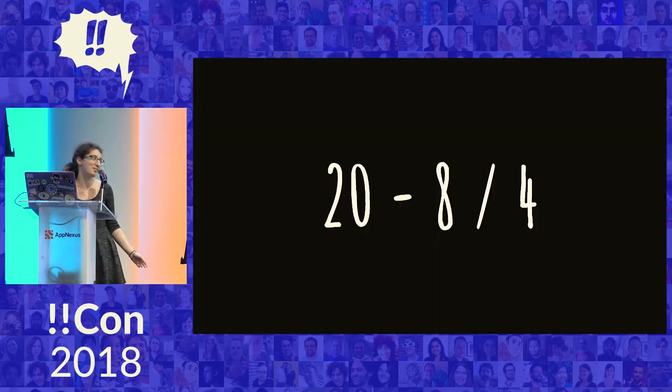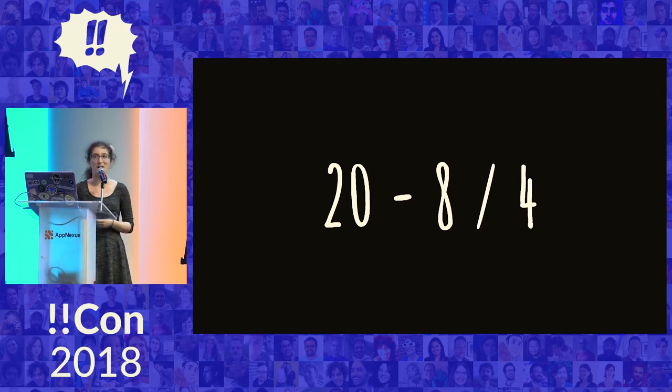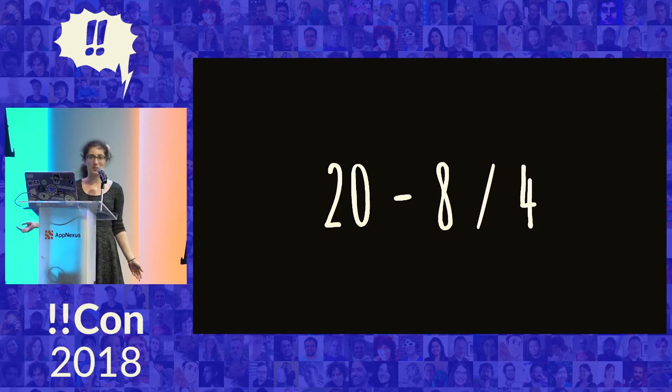So here's some math. This is an expression that could be simplified. And when I look at this, and probably same for many of you, without even really thinking much about it, I know that eight divided by four happens first. Division has precedence over subtraction.